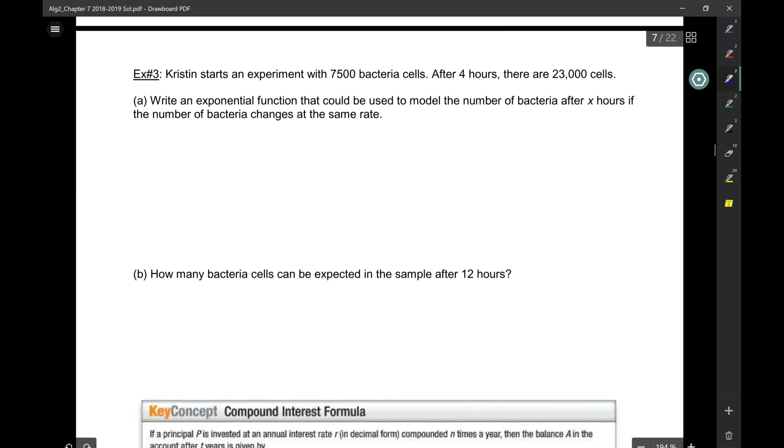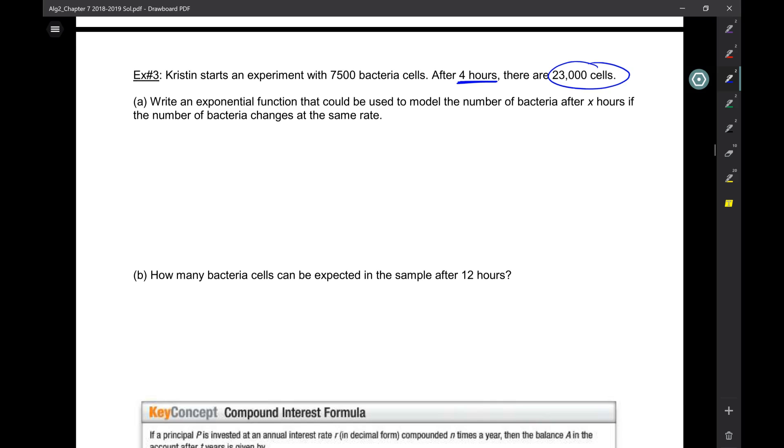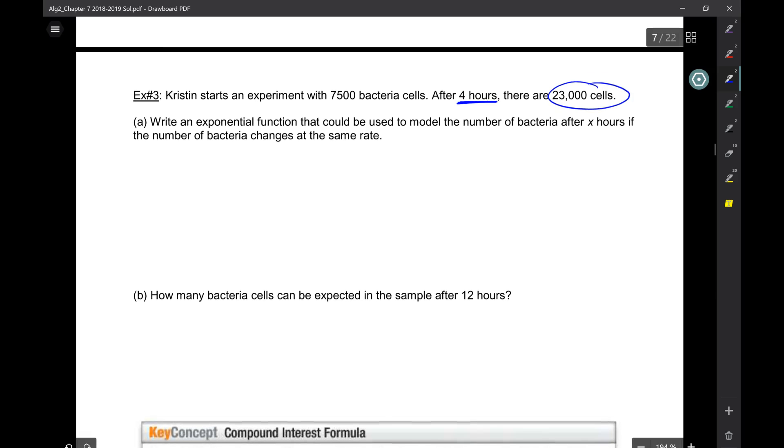So what you're going to do is substitute into that, solve for b, and then you have to put b back into the main equation. It's very important that when you're done, x and y are variables. x shows up and y shows up. So let's do one. Kristen starts an experiment with 7,500 bacteria cells. After four hours, there are 23,000 cells. Write an exponential function that could be used to model the number of bacteria after x hours if the number of bacteria changes at the same rate.